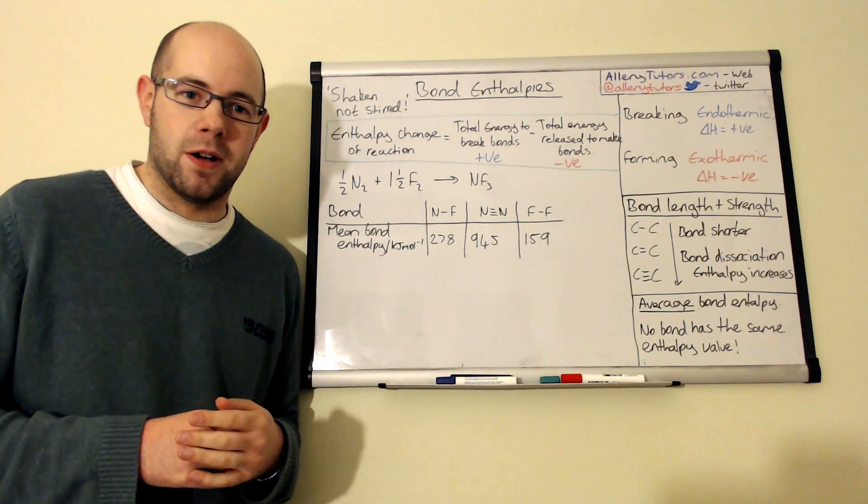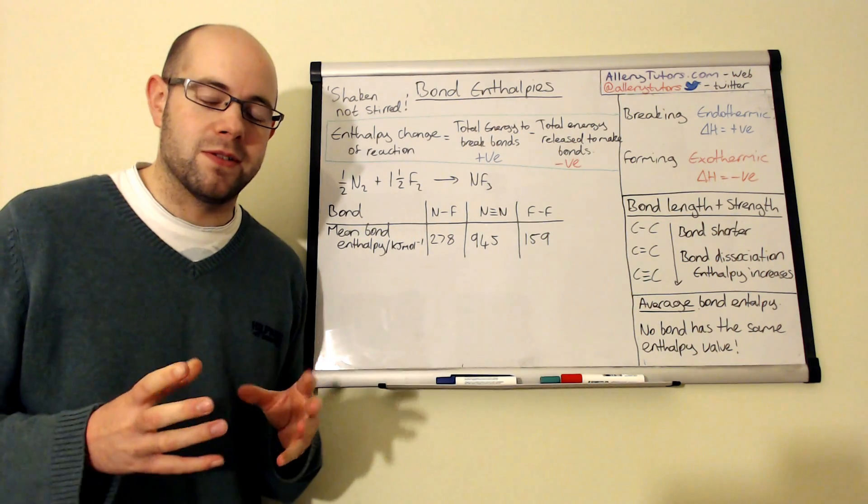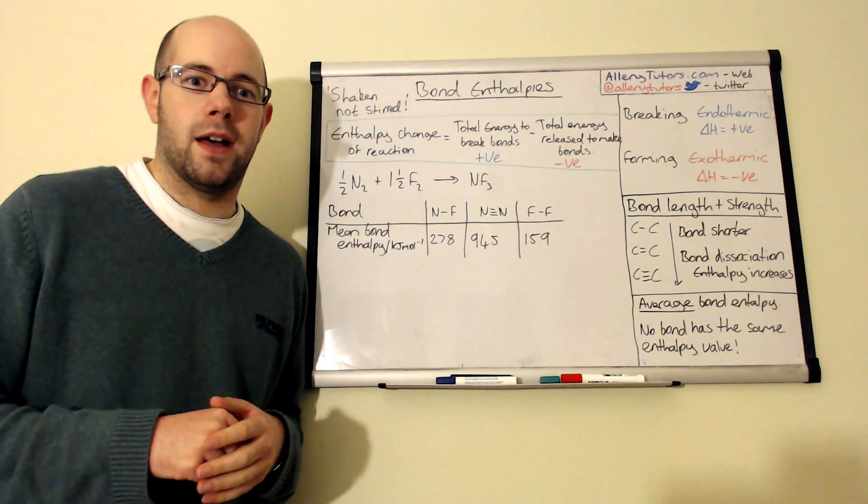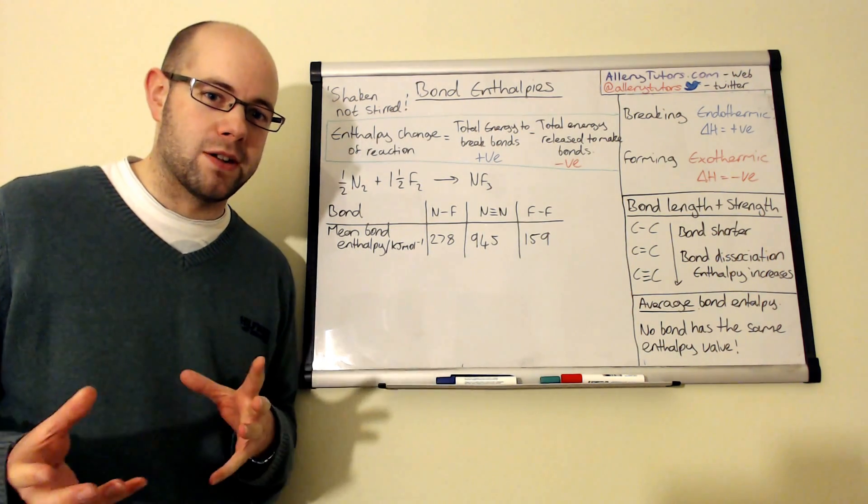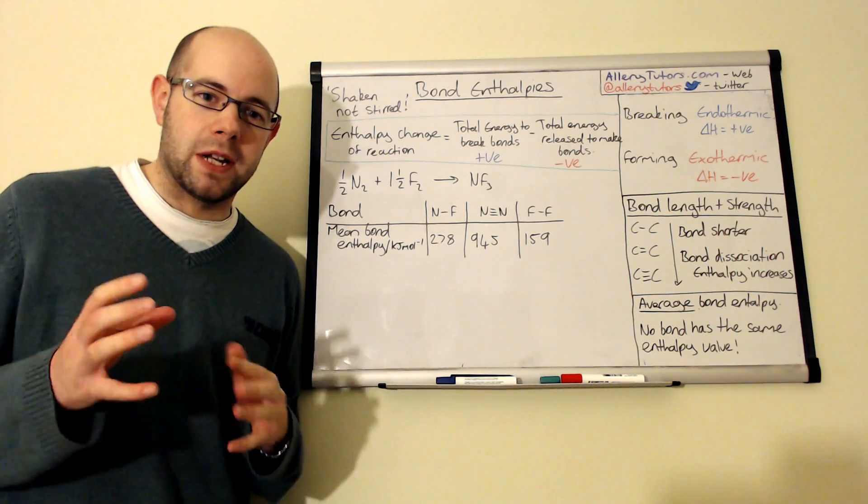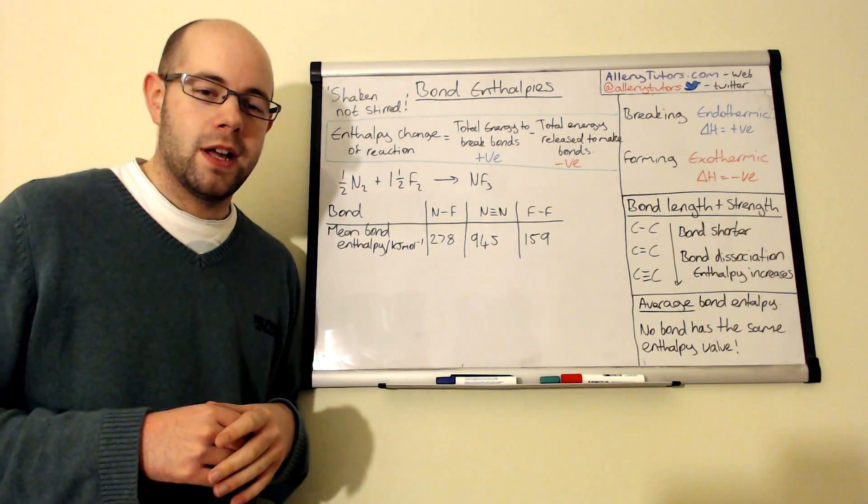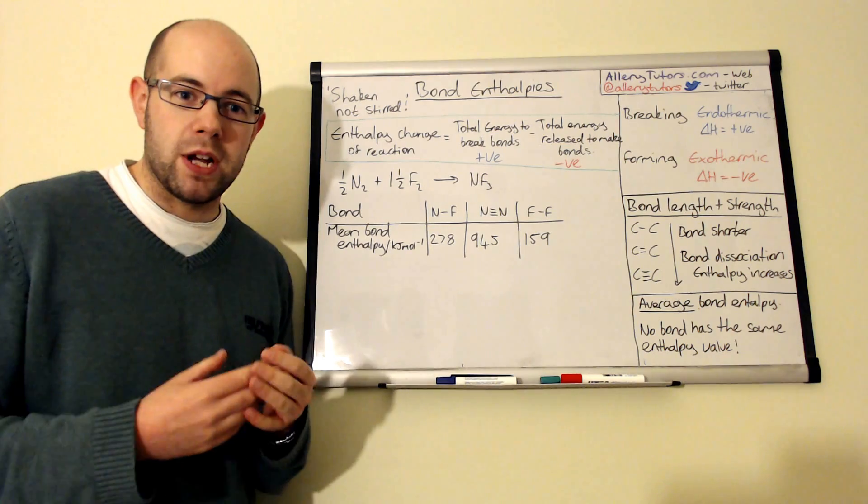Now enthalpy, as you may know, actually comes in two values. You can have an exothermic negative value or you can have an endothermic positive value. Now we can link them two values into bond breaking and bond forming.